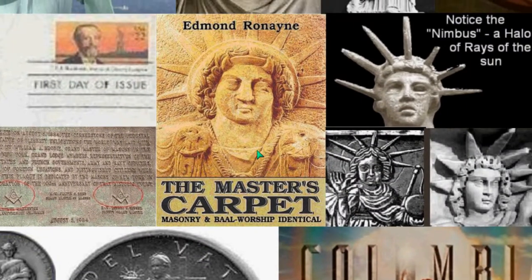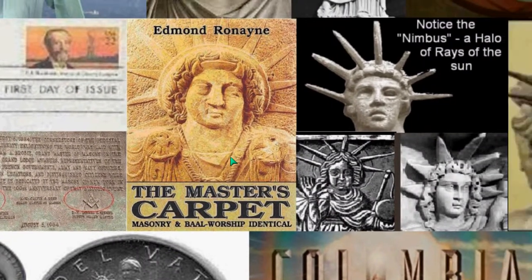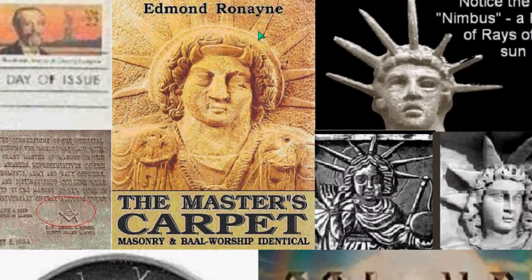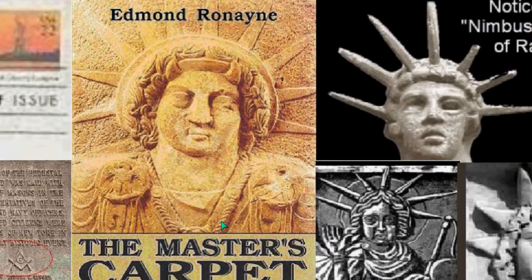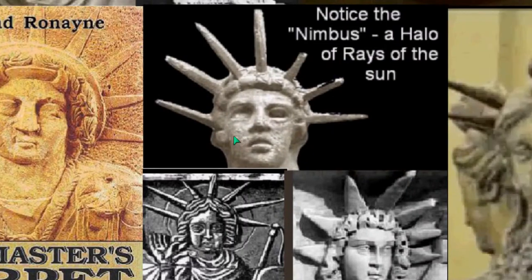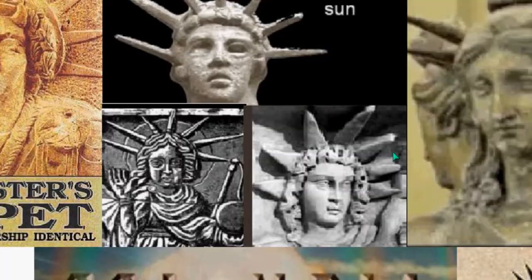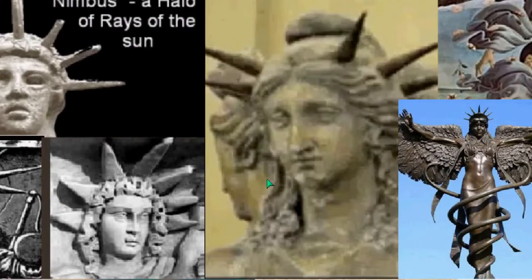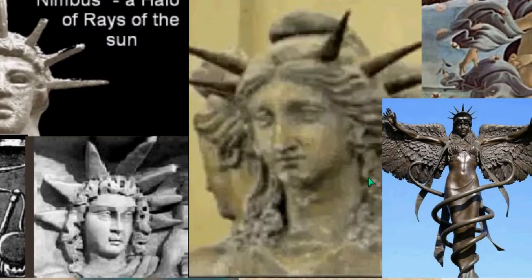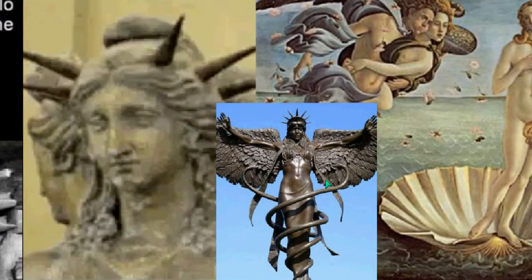This was a gift of the French Freemasons to the American Freemasons. Now, looking at the sun goddesses depicted in the past — this is Baal worship. You can see the sun goddess, and all of these goddesses share the depictions of the sun rays on the head.